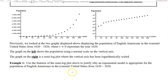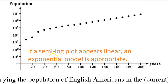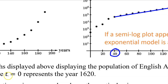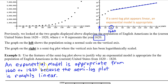Example 1: Use the features of the semi-log plot to justify why an exponential model is appropriate. If a semi-log plot appears linear, an exponential model is appropriate. However, only part of this graph appears linear on the semi-log plot, so an exponential model is appropriate starting there. Since t equals 0 represents the year 1620, the number 40 represents the year 1660. We can say that an exponential model is appropriate from 1660 to 1820 because the semi-log plot is roughly linear.